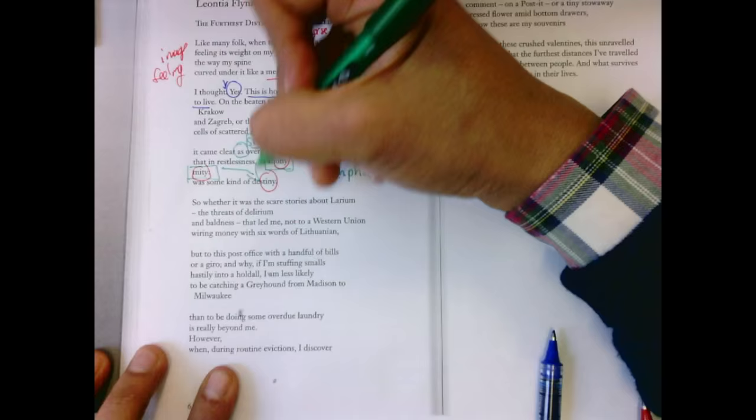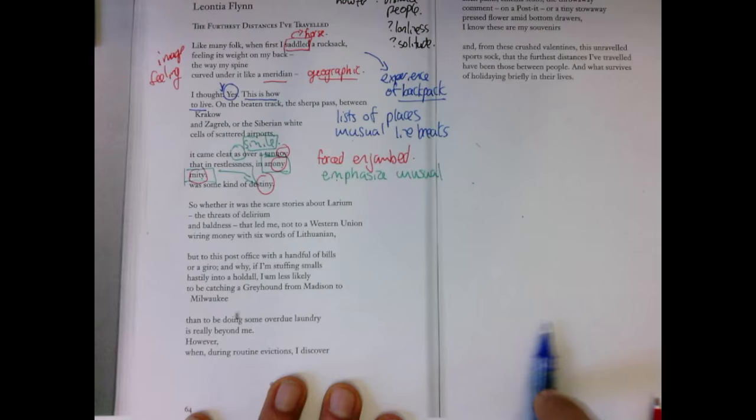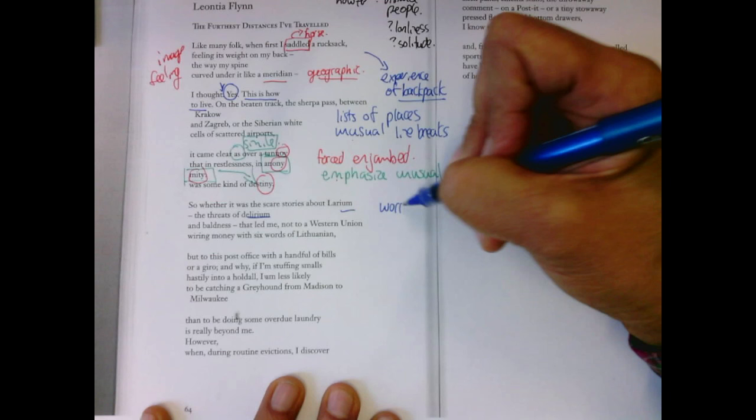So that whether it was the scare stories about larium, the threats of delirium and baldness that led me, not to a Western Union wiring money with six words of Lithuanian, but to this post office with a handful of bills or a gyro. So she's talking about worries, risks, and she's not bothered.